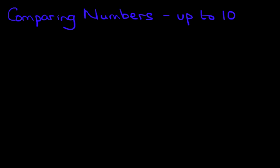The first thing to do is to introduce the different symbols that are used. We have one symbol which looks like this — it's pointing this way. We also have another symbol which looks like this — it's pointing the other way. Now you'll recognize the third symbol: that's the equals sign. That means it's the same.